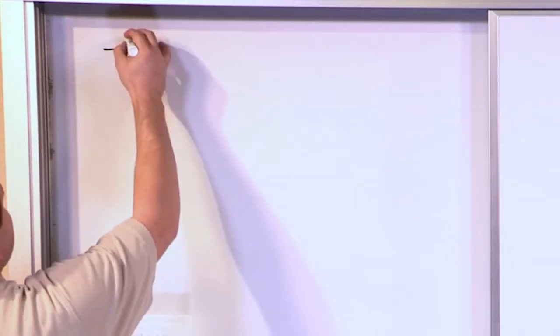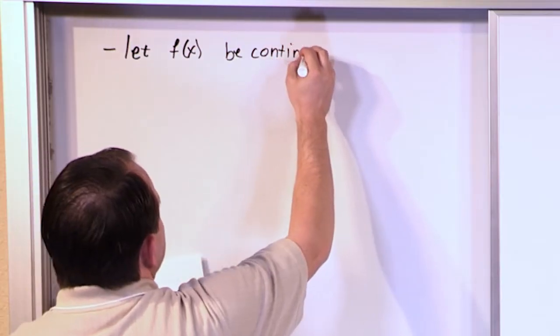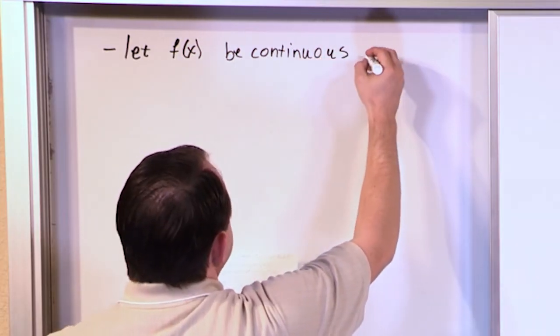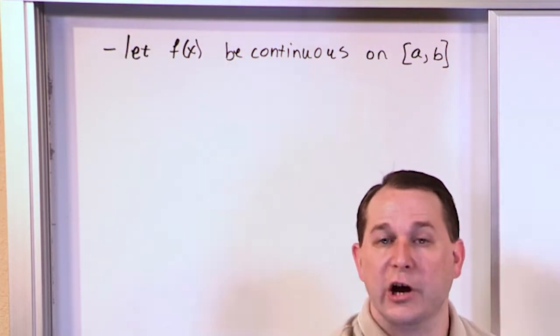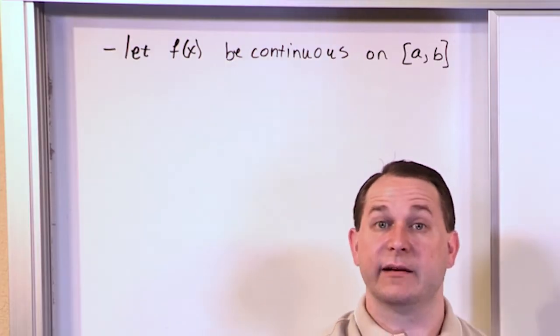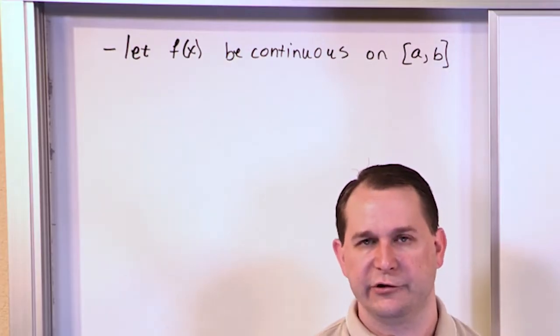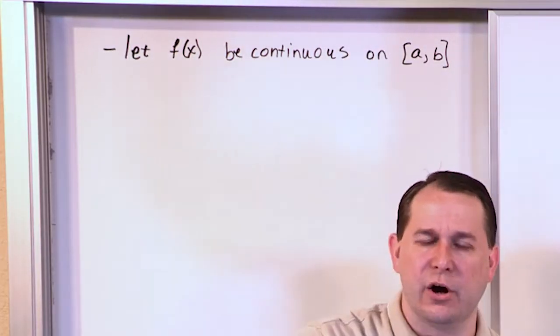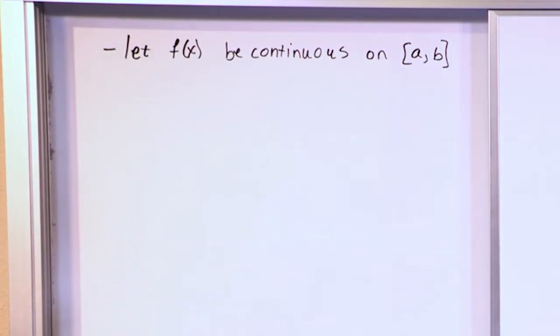For the fundamental theorem of calculus, there are a couple of things you need to know. First, you're going to let some function f(x) be continuous on some interval [a, b]. What this means is that your function is smooth — there are no jumps. You can't have crazy functions that discontinuously jump to some other value, like a piecewise defined function. Continuous means nice smooth changes; they can be steep, but you can't jump discontinuously from one point to the other.